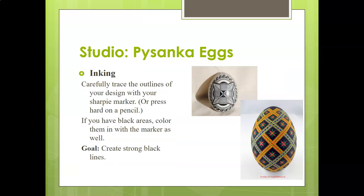After you have your color, then you ink. If you don't have colored things and you're just using Sharpie or pressing down hard with pencil, trace your designs with the Sharpie marker or pencil. If you have black areas in the egg, color them in with the marker as well. Your goal is to create strong black lines that act as divisions. This top egg here is just white and Sharpie.